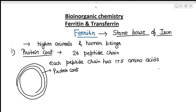In this coat there are channels. From these channels the iron can go outside or come inside. As many as 4500 iron atoms can be reversibly stored inside this protein coat. This protein coat is complex but it is soluble.